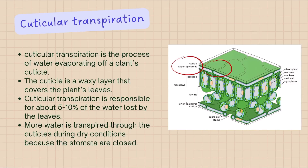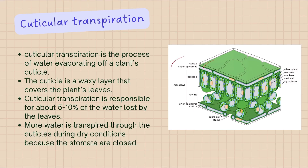Cuticular transpiration is the process of water evaporating from a plant's cuticle. The cuticle is a waxy layer that covers the plant's leaves, and cuticular transpiration is responsible for about 5–10% of the water lost by the leaves. More water is transpired through the cuticles during dry conditions because the stomata are closed.